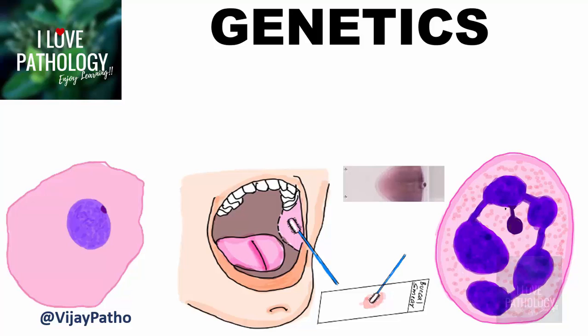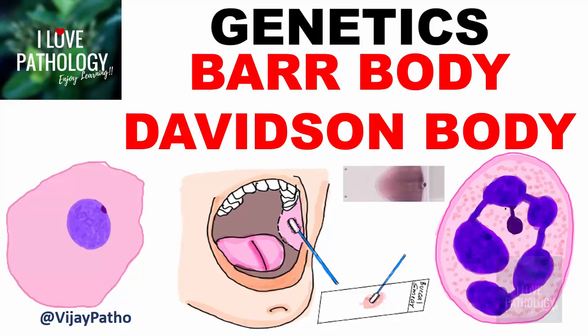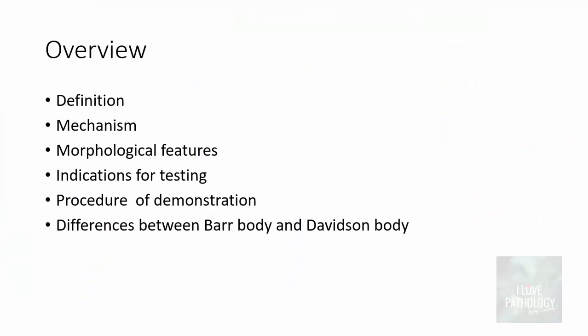Hello everyone. Welcome to this short tutorial from Pathology Made Simple at ilovepathology.com. This is a short topic from the chapter Genetics. Looking at the illustrations, I am sure by now you would have guessed the topic. Yes, this is the Bar Body or Davidson Body. In the next 10-12 minutes I will be talking about what is Bar Body, what is the mechanism of its occurrence, what are the morphological features, indications for testing, procedures for demonstration, and finally the differences between the Bar Body and the Davidson Body.